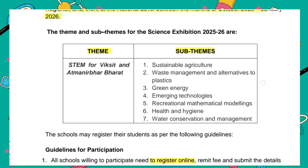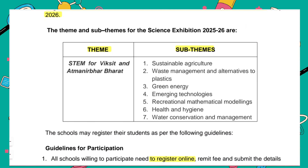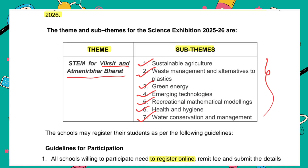Now let's see the theme and sub-theme for the Science Exhibition 2025-26. The theme is 'Viksit and Aatma Nirbhar Bharat.' The sub-themes are: Sustainable Agriculture; Waste Management and Alternative to Plastic; Green Energy; Emerging Technologies; Recreational and Mathematical Modeling; Health and Hygiene; and Water Conservation and Management. Students can choose any one of these sub-themes to make their model.